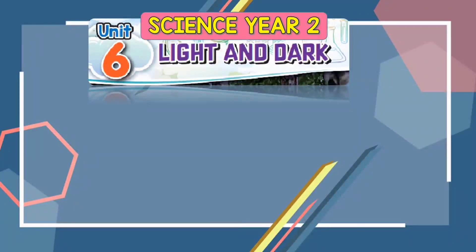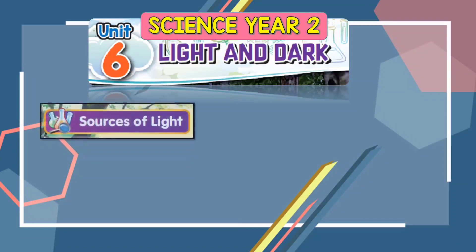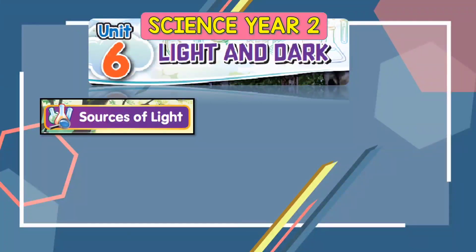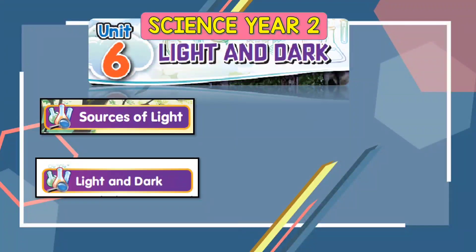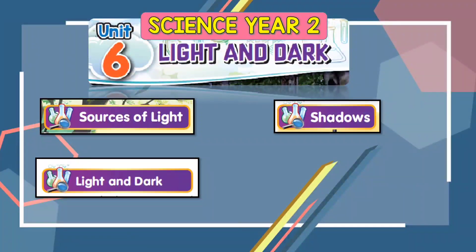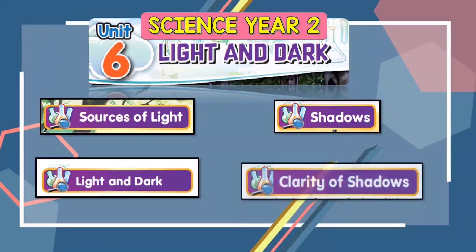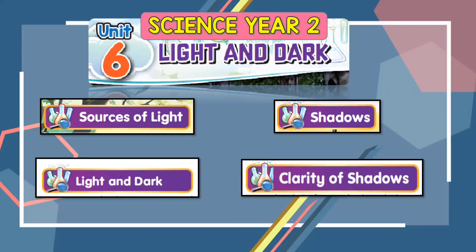There are 4 subunits in this topic. Firstly, Sources of Light — Sumber Cahaya. Secondly, Light and Dark — Terang dan gelap. Thirdly, Shadows — Bayang-bayang. Lastly, Clarity of Shadows — Kejelasan bayang-bayang.